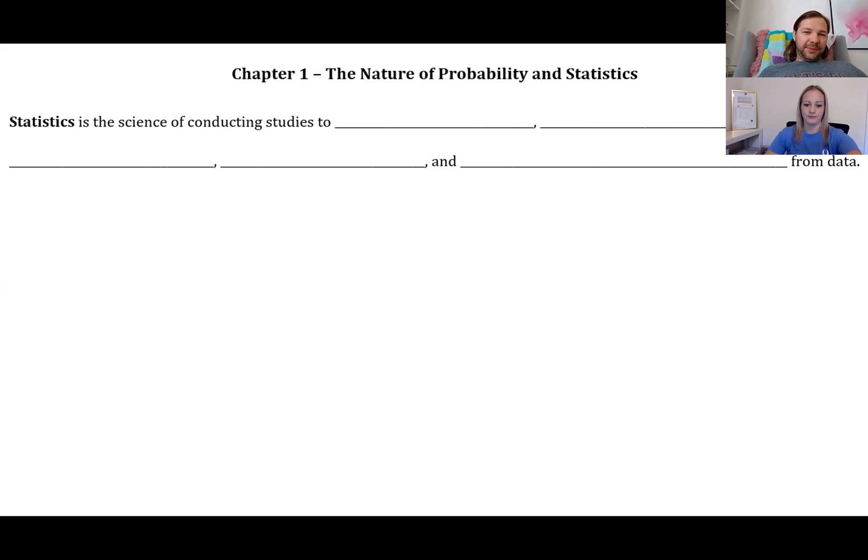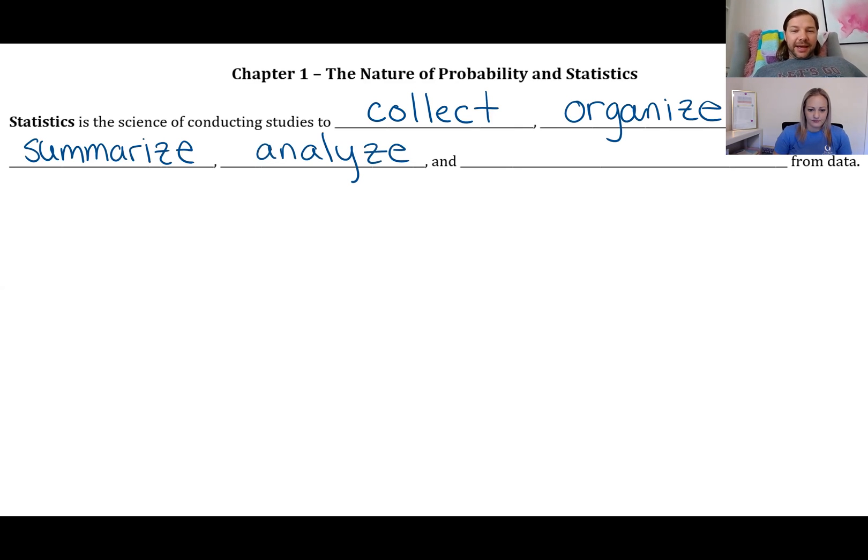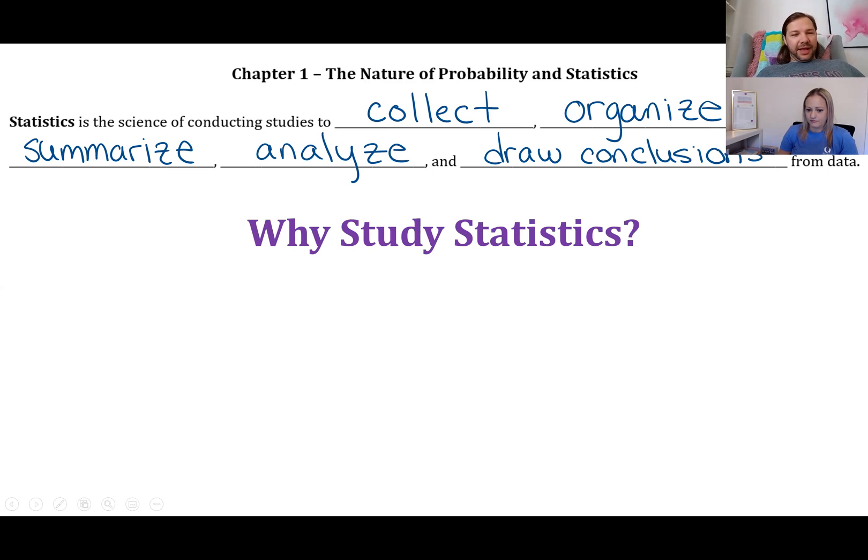I'm going to start with Chapter 1, which is basically just the vocabulary that we're going to be using throughout the semester. It's called the Nature of Probability and Statistics. We're going to do a lot of terminology and examples, but I'm going to go quickly because we're going to see a lot of this stuff over and over again. So statistics is the science of collecting and organizing, summarizing, analyzing, and drawing conclusions from data. In other words, statistics is like data science.